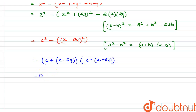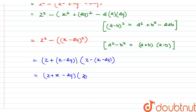Simplifying, this gives us (z + x - 2y) as one factor and (z - x + 2y) as the other factor. So this is our answer. Thank you.